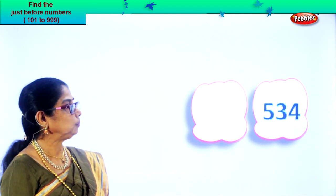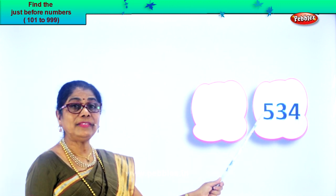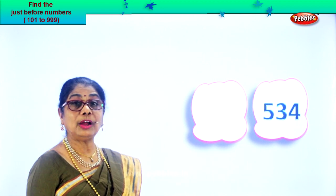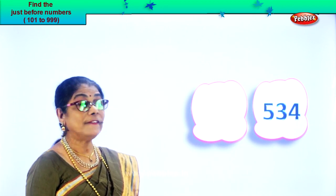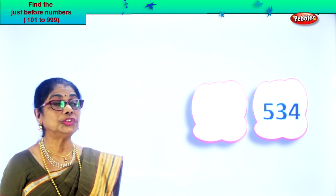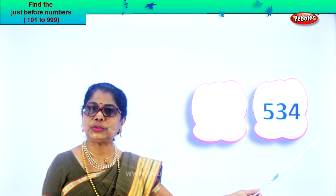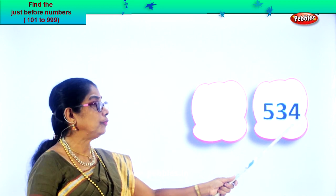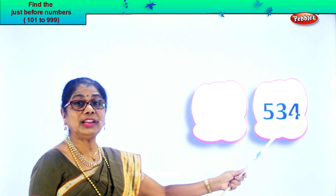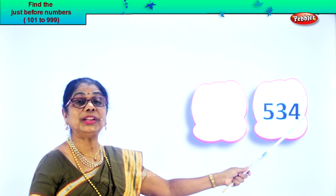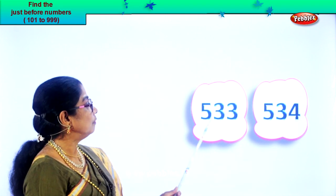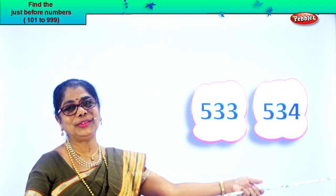Look what you have — five hundred and thirty-four. Five in the hundreds place, three in the tens, and four in the ones place. Find the number just before that. First, let's go to the ones place. In the ones place you have four. One less than four is three. So three means thirty-four, one less is thirty-three. Five hundred and thirty-three could be the number before. Five hundred and thirty-three, five hundred and thirty-four.